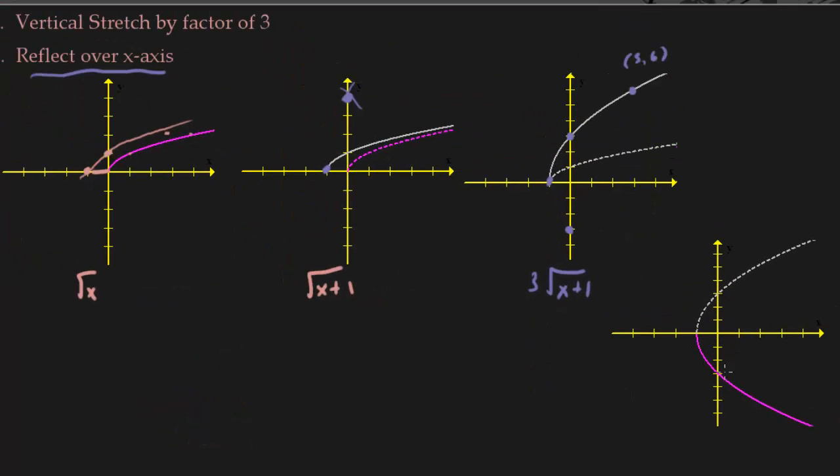Okay, adjusting the tick marks, because I had to go down a little bit farther. This is now my final graph. So this is negative 3 square root of x plus 1.